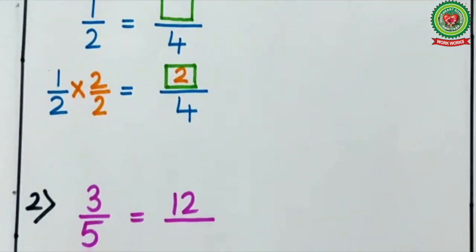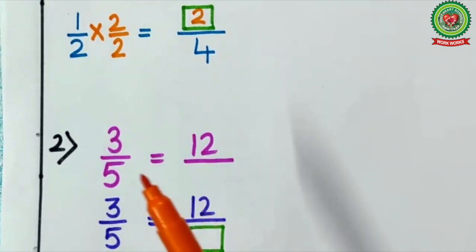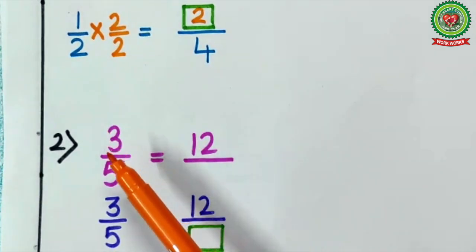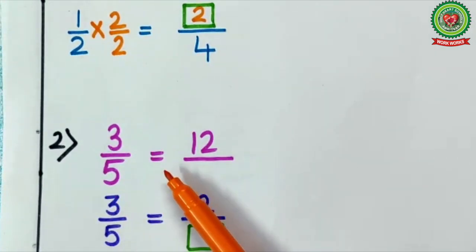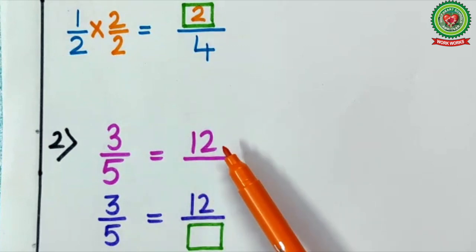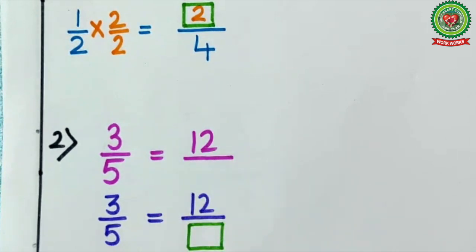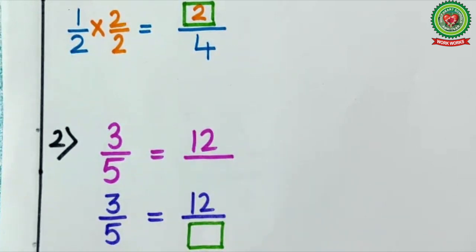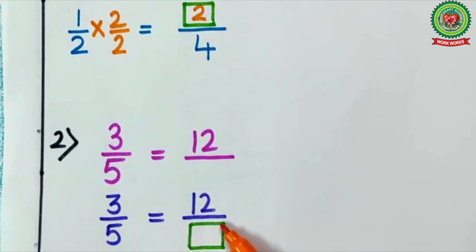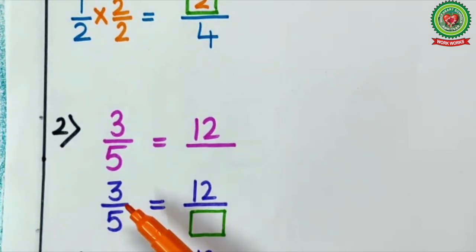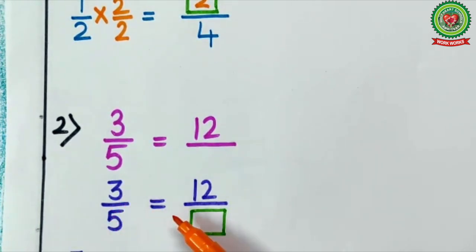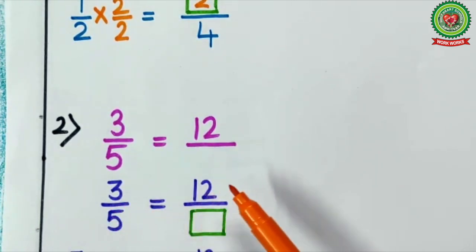Here we have 3 upon 5 equals to 12 upon blank. We know our first step: at the place of blank we will put a box. So it becomes 3 upon 5 equals to 12 upon box.